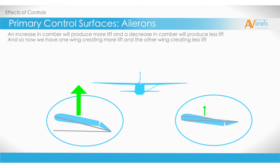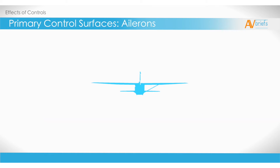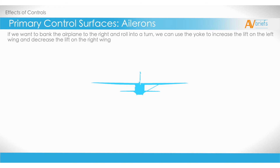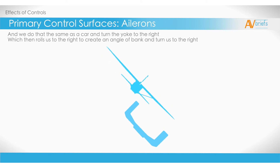The result from this will be the left wing lifting and the right wing dropping down. If we want to bank the airplane to the right and roll into a turn, we can use the yoke to increase the lift on the left wing and decrease the lift on the right wing. And we do that the same as a car, and turn the yoke to the right. This then rolls us to the right to create an angle of bank and turn us to the right.